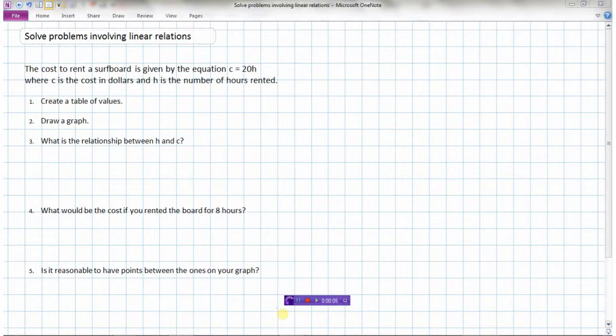Let's look now at how we can solve some problems that involve linear relations. We've got a problem here. The cost to rent a surfboard is given by this equation, C equals 20 times H, or C equals 20H, where C is the cost in dollars and H is the number of hours that the surfboard is rented.